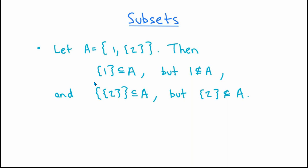The reason the set containing {2} is a subset of A: its only element is the set containing 2, and that set containing 2 is an element of A, so every element of the left-hand side is an element of A. But the set containing 2 itself is not a subset of A, because the number 2 is an element of {2}, and the number 2 is not an element of A — only the set containing 2 is an element of A, not 2 itself. Therefore, the set containing 2 is not a subset of A.